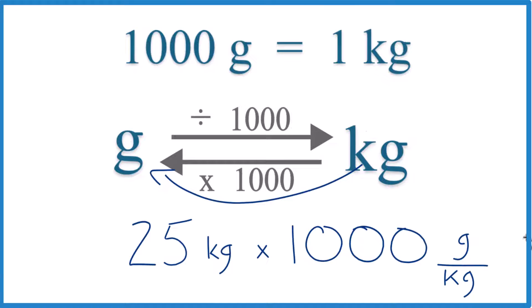So now we have kilograms. We're going to multiply. We have kilograms on the top and the bottom. They're going to cancel out. We'll be left with grams. And grams, that's what we're looking for.